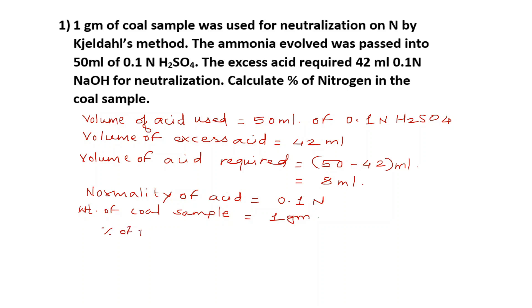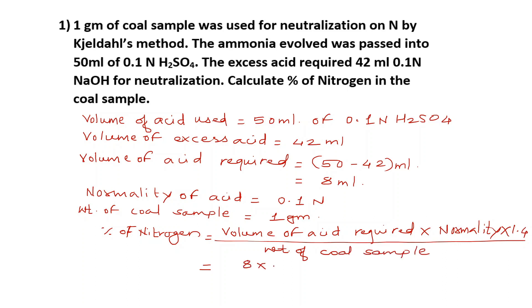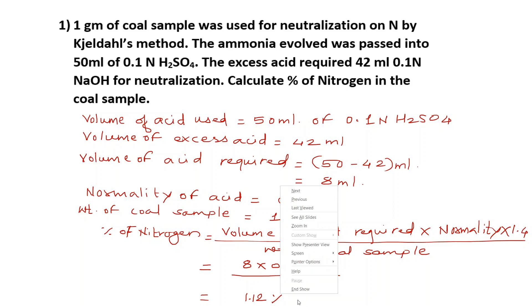The formula for calculation of percentage of nitrogen is: Percentage of nitrogen = (volume of acid required × normality × 1.4) / weight of coal sample. Substituting values: (8 × 0.1 × 1.4) / 1. After calculation, our answer is 1.12%. So that is the percentage of nitrogen present in the coal sample.